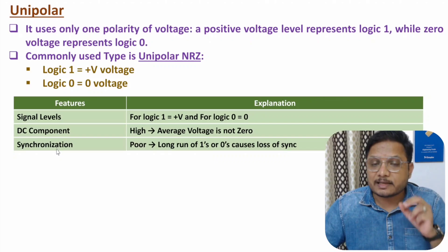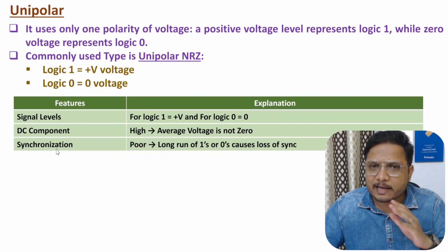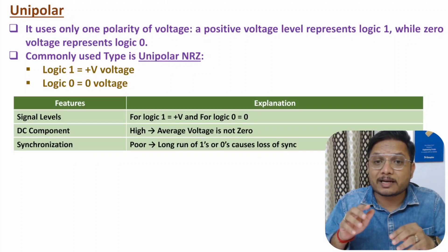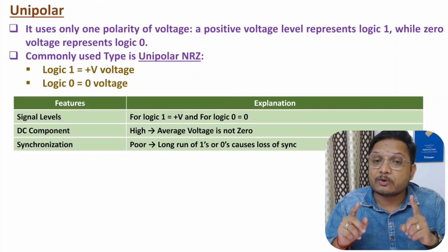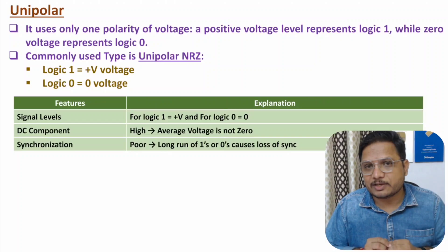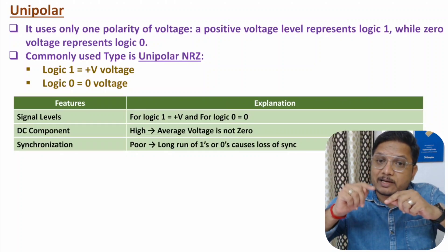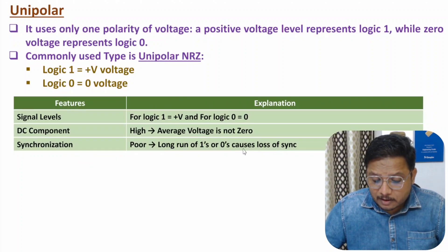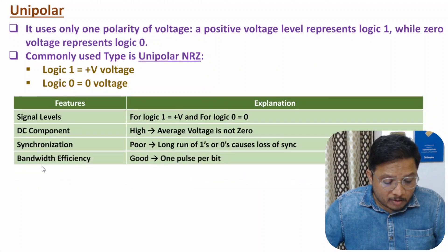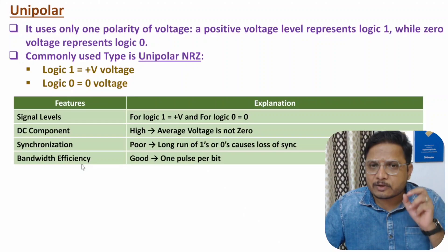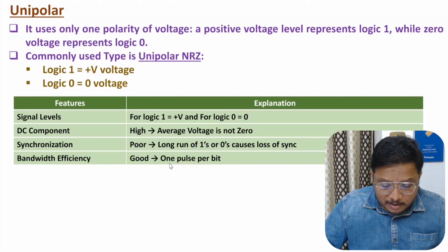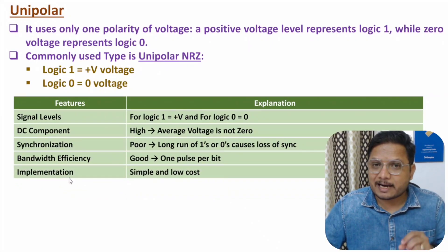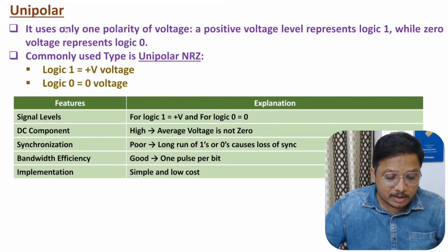Synchronization in unipolar is very poor. The reason is if you have consecutive zeros or consecutive ones, then there is no transition of voltage. As there is no transition of voltage, it will have poor synchronization. Long runs of ones or zeros cause loss of synchronization. If you talk about bandwidth efficiency, that is good with unipolar because it needs one pulse per bit. And if you talk about implementation, that is simple and low cost.